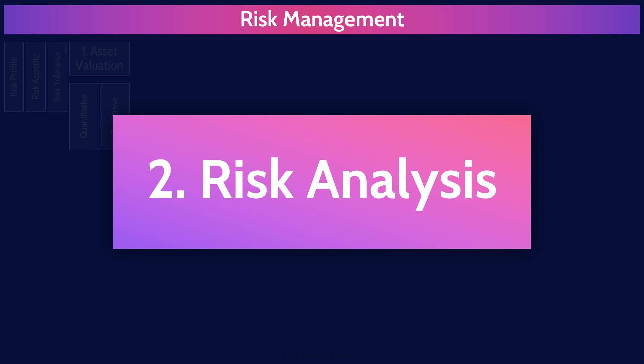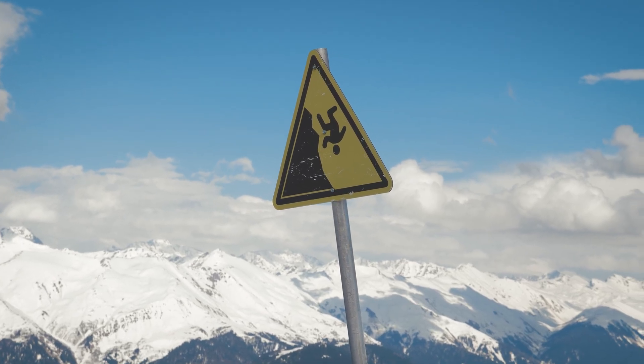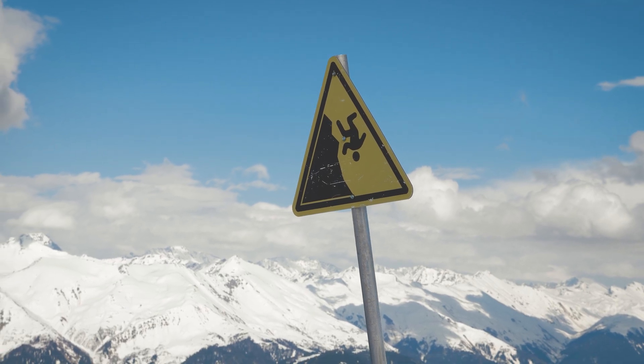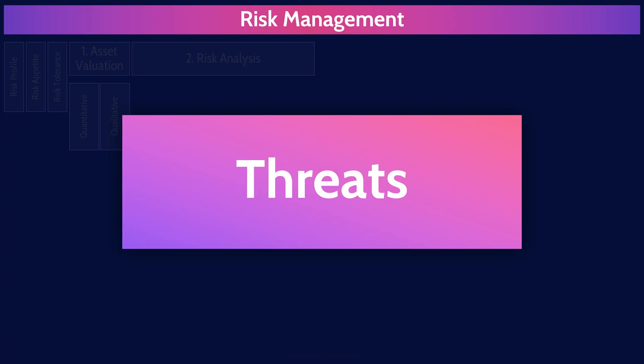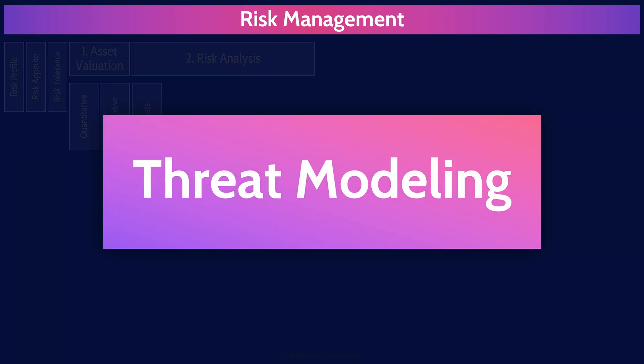Once asset valuation is complete, we move to step two: risk analysis. Risk analysis is where you identify the risks associated with each asset. To understand those risks, you need to look at four things: threats, vulnerabilities, impact, and likelihood. Threats are any potential danger — events, situations, or actions that have the potential to cause harm or damage to an organization's assets, operations, or reputation, from sources such as natural disasters, cyber attacks, fraud, theft, or human error. We can use threat modeling methodologies to help systematically identify and prioritize threats.